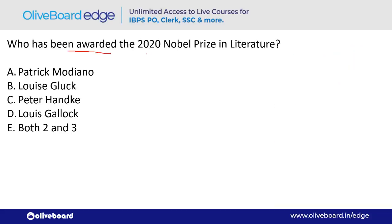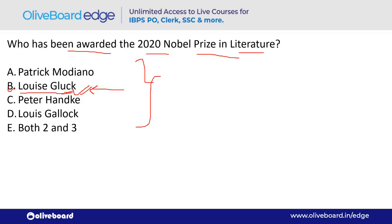Who has been awarded the 2020 Nobel Prize in Literature? The answer is Louise Glück — option B. A memory tip: Literature is related to English, and English is a section in banking/insurance exams. Remember: 2020 Nobel Prize in Literature — Louise Glück.